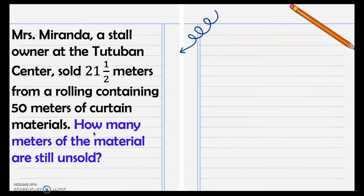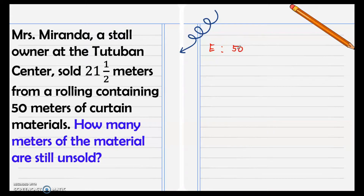Next, Mrs. Miranda, a stall owner at the Tutuban Center, sold 21 and one-half meters from a rolling containing 50 meters of curtain material. How many meters of the material are still unsold? The question is asking for the unsold materials, which means we need to subtract. Following the SM form, we write the equation as: 50 minus 21 and one-half equals n.